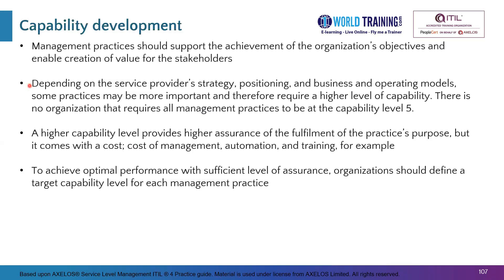Organizations may decide to have every practice at a certain target level only, and that depends mainly on the service provider's strategy, their positioning in the business and market, and their business and operating models. A higher capability level provides higher assurance of fulfilling the practice's purpose, but it comes with cost — cost of management, automation, and training. Therefore, rather than targeting level five for all 34 practices, organizations need to define a specific target capability level for each practice, for example starting at level two for service level management and moving to level three as the business grows.